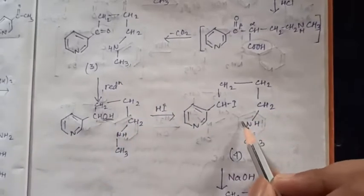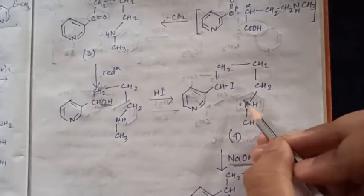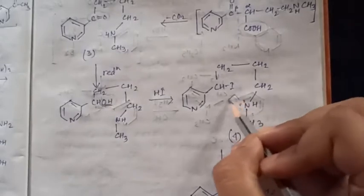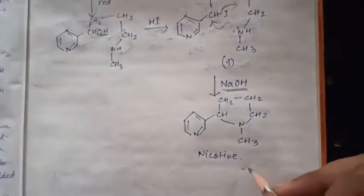We then perform steam distillation with a basic solution. This step is cyclization. The nitrogen attacks carbon and iodide leaves. After cyclization, we get our desired product, nicotine. This completes the first synthesis, and I hope it is clear to you.